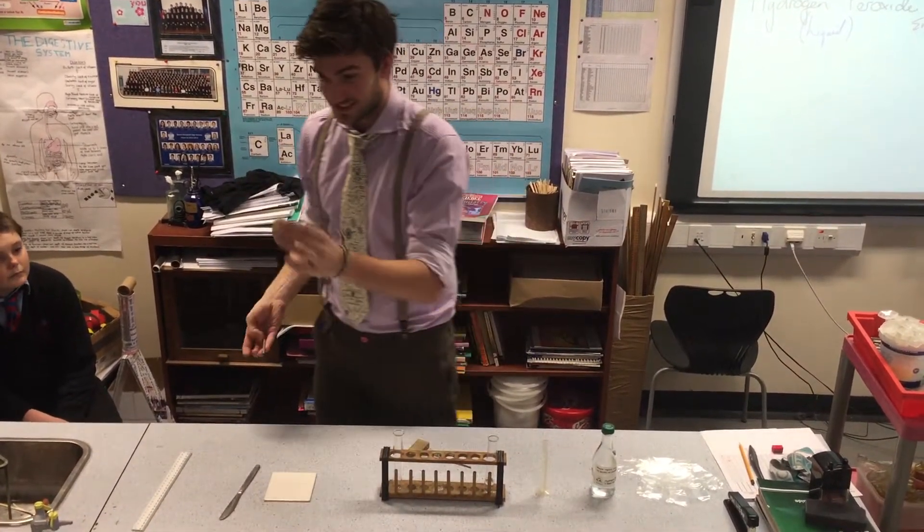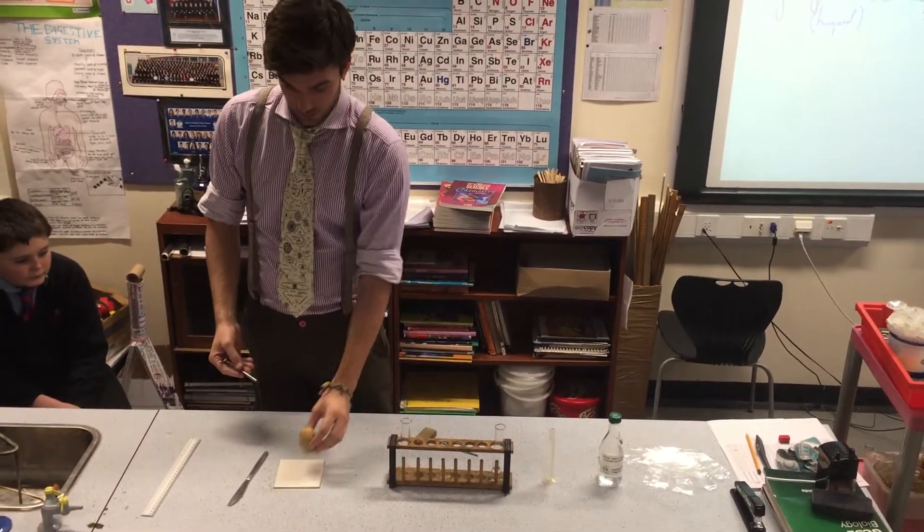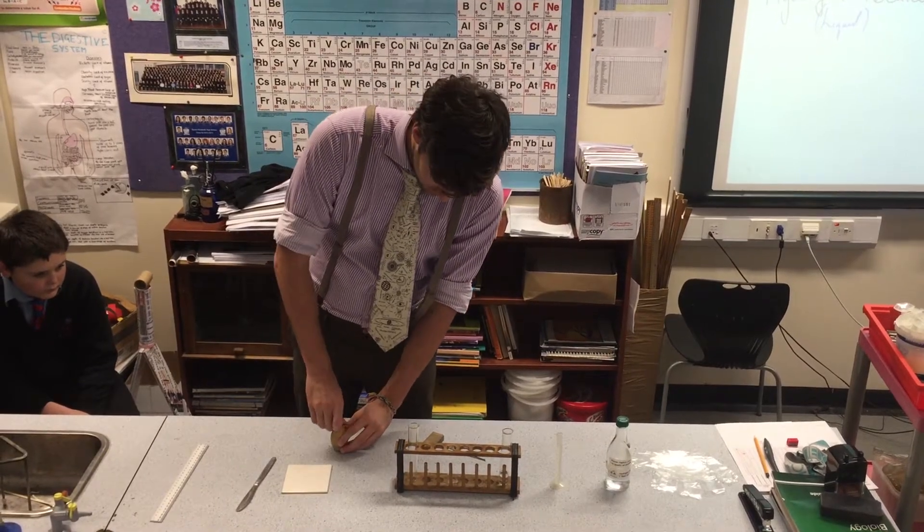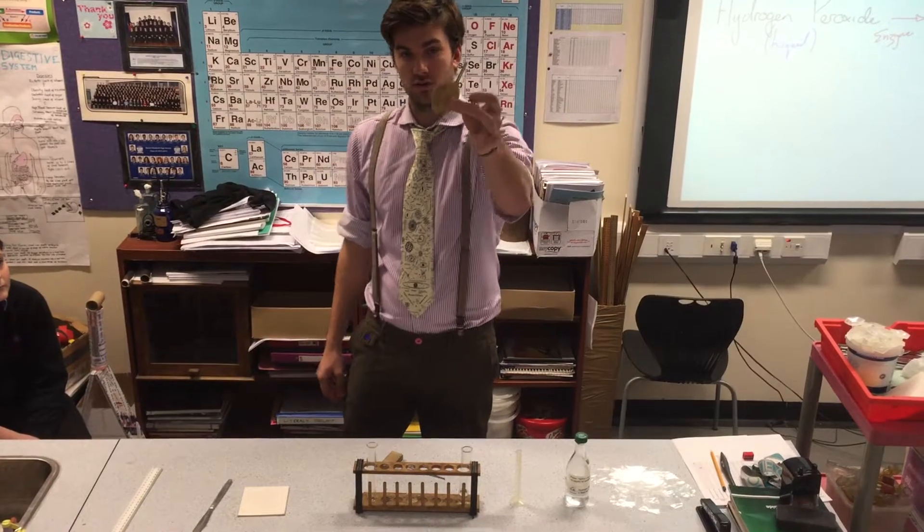So what is the easiest thing to do, is if you put that onto either the table or the spotting tile, push down gently, and you'll see the cork borer has gone straight through.